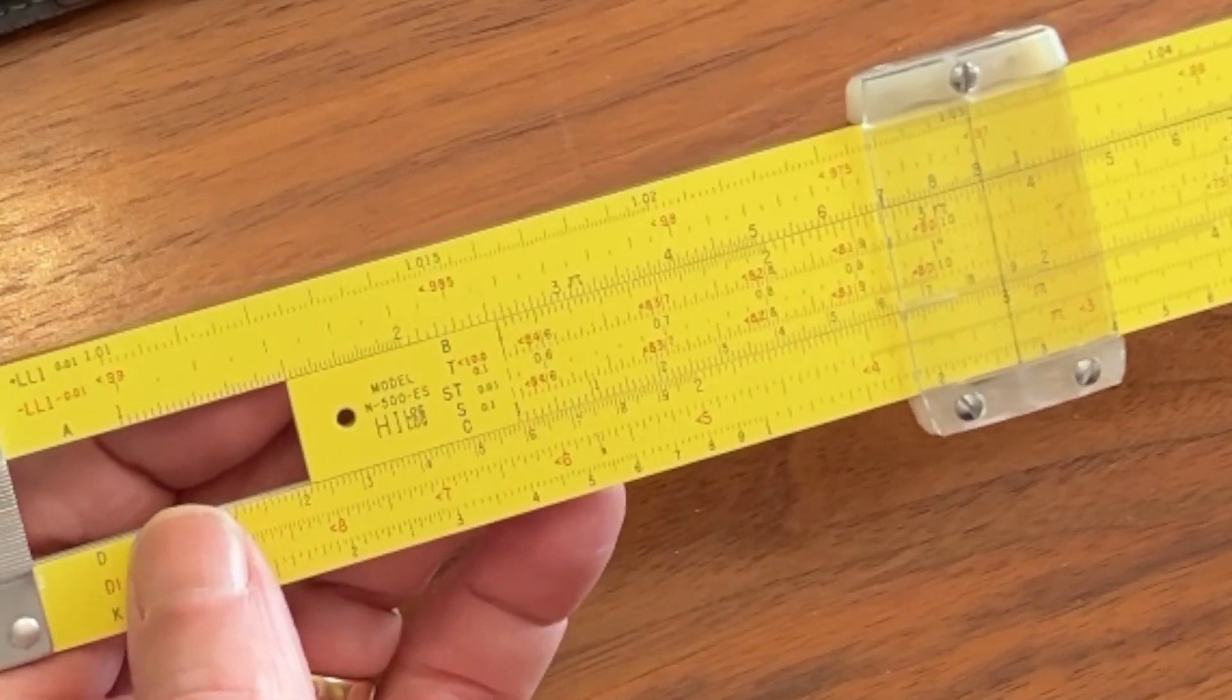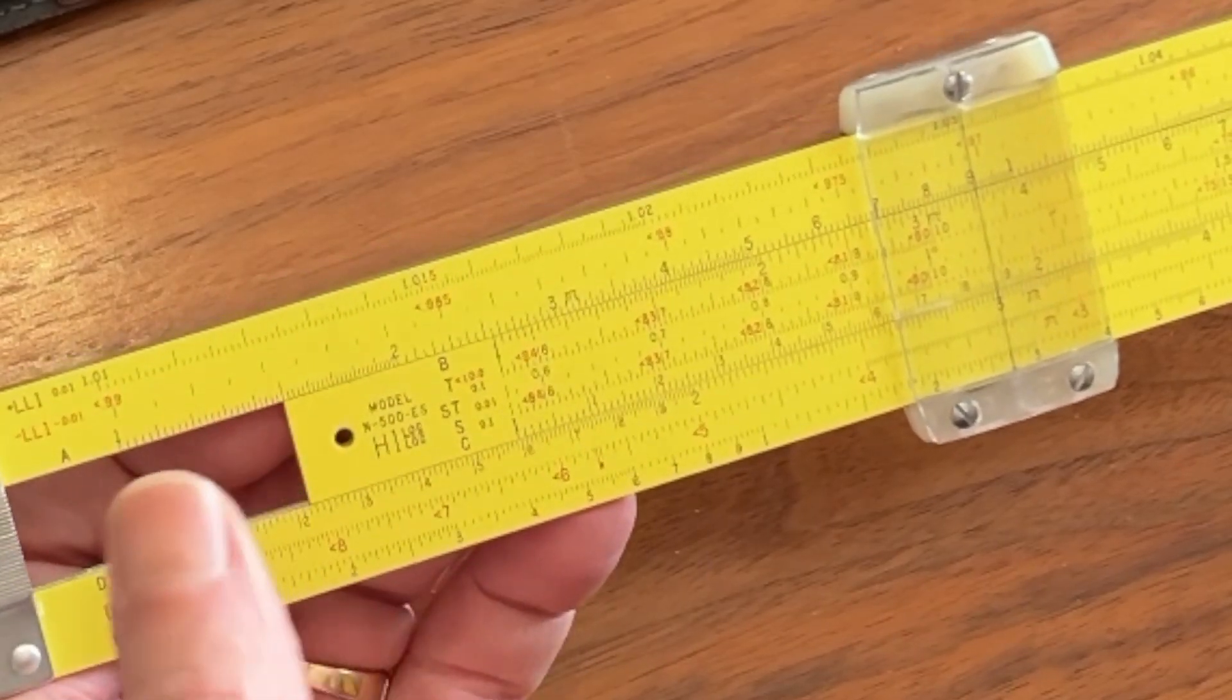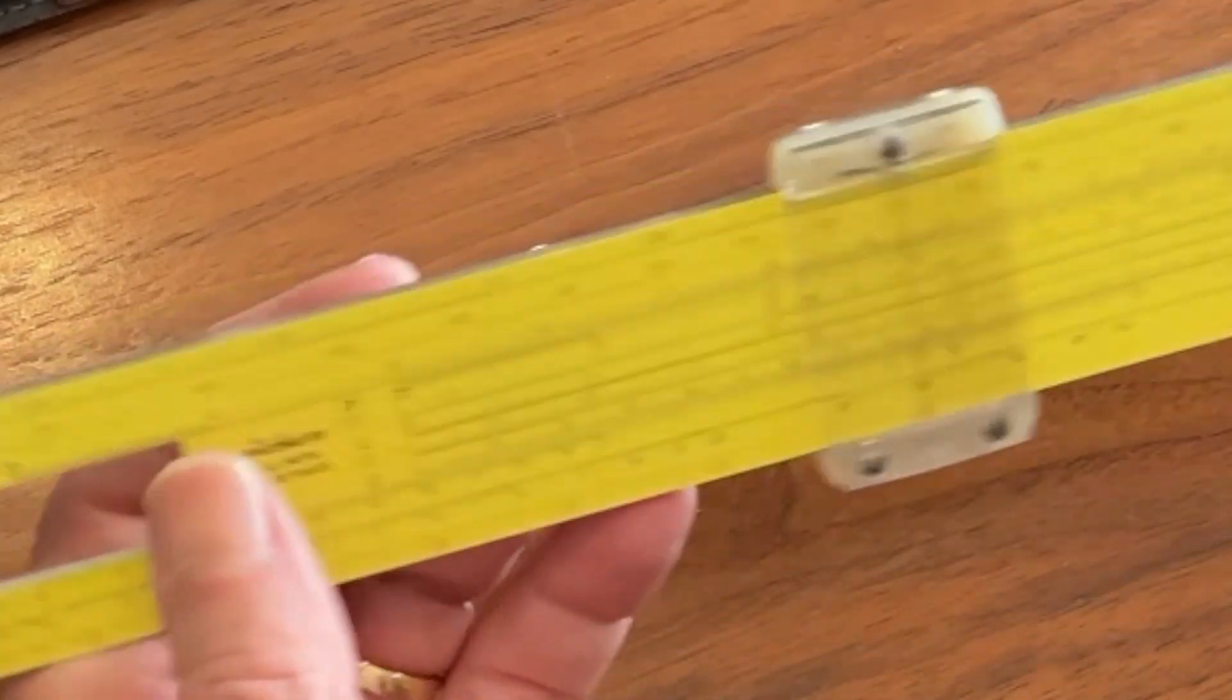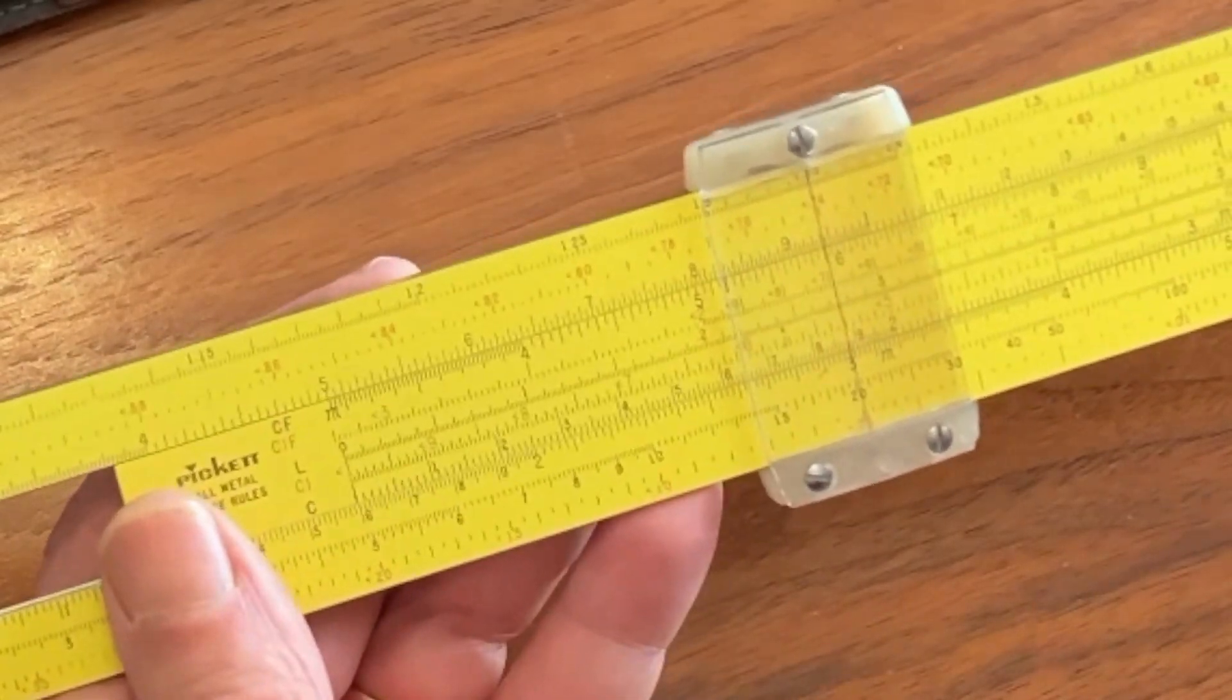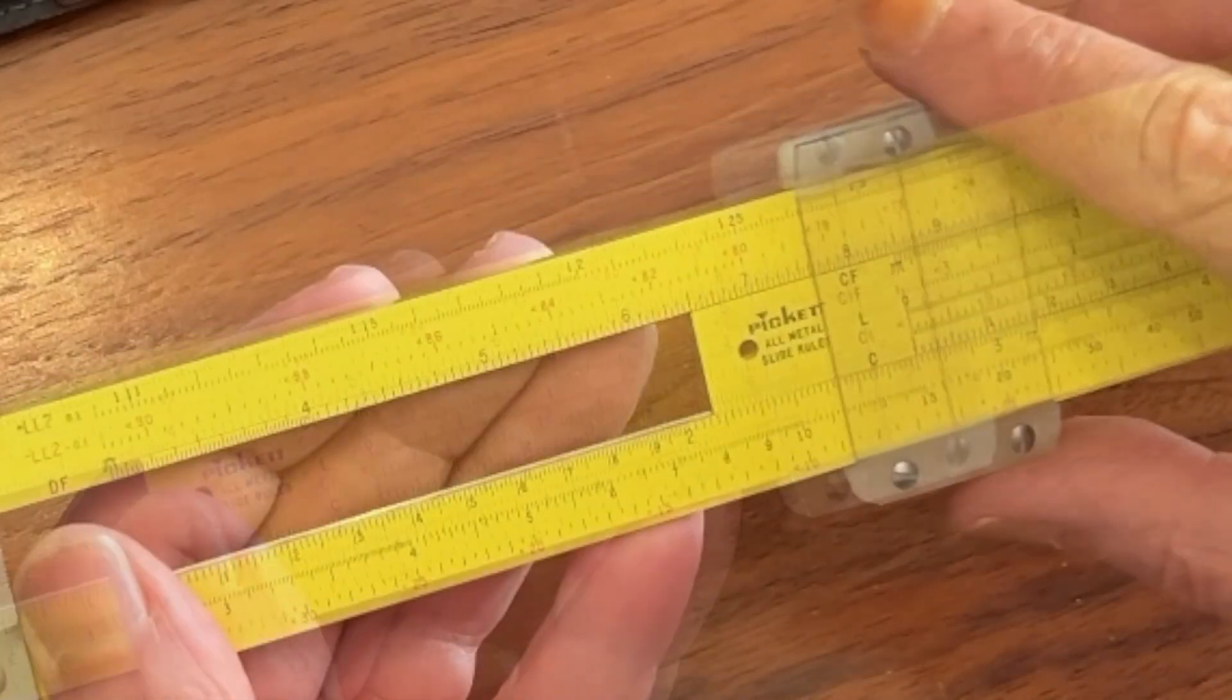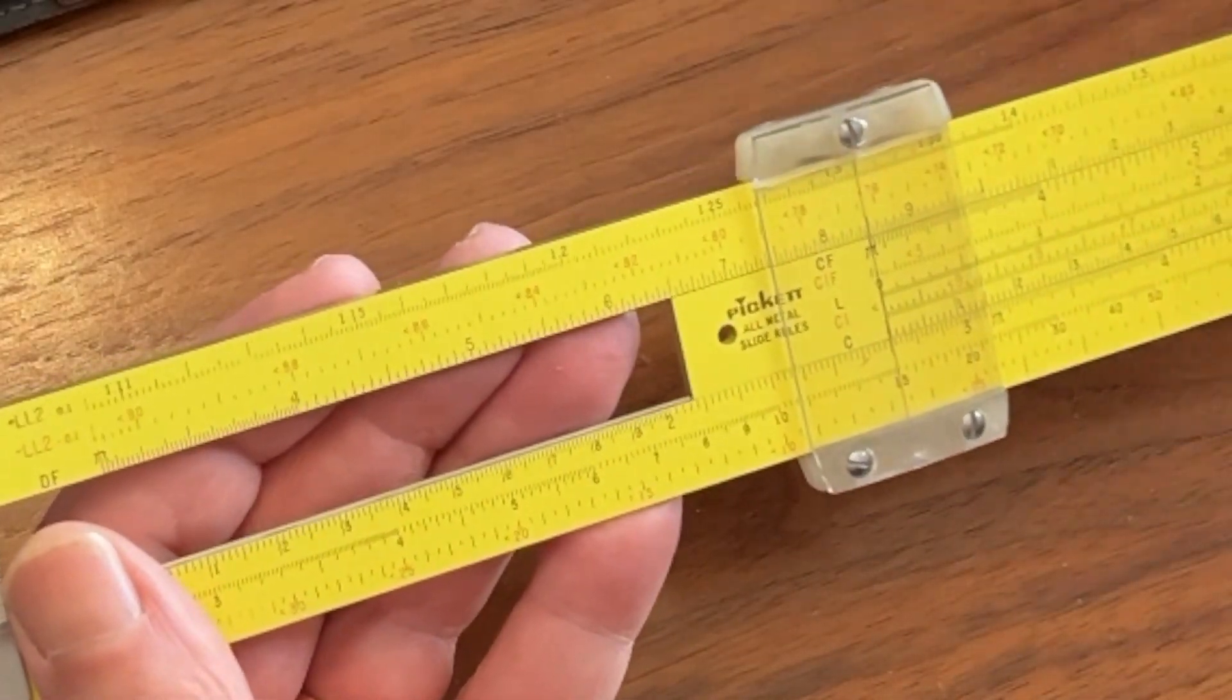Now likewise we can divide it by 1 over 9 on the CI scale, but we don't have a CI scale on this side. It's on the other side. What do we do? Well flip the slide rule right over. Notice it's still on 3. Now we've got the CI scale right here, and there's our 27. So that's how you transfer these back and forth between the scales.